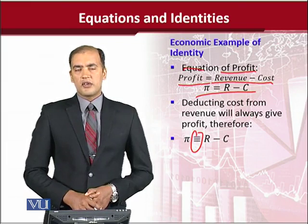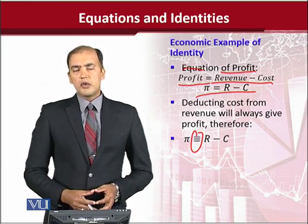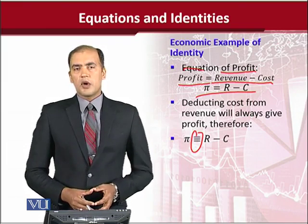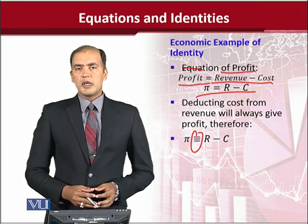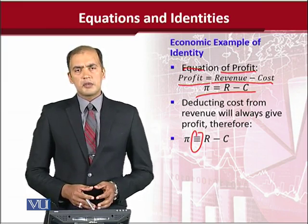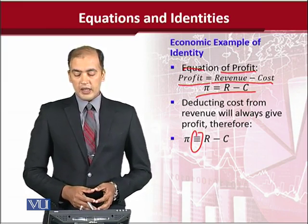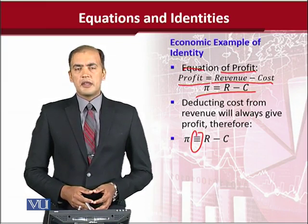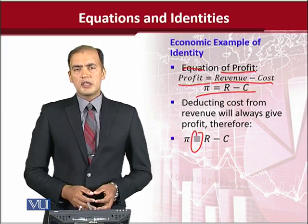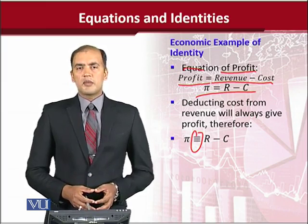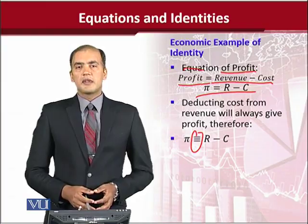An identity uses this sort of equality where three horizontal lines are drawn — the triple bar symbol (≡). This is how an identity looks. If you put any value into this formula, the answer will be satisfied — the left-hand side will always equal the right-hand side. This is how we understand equations in comparison with identities. Thank you.